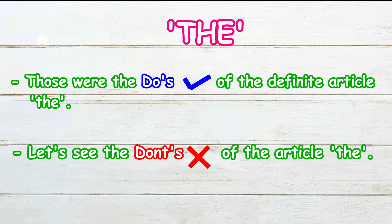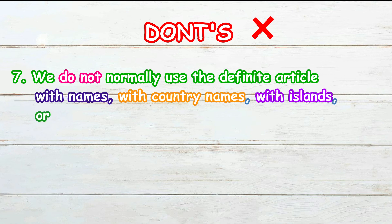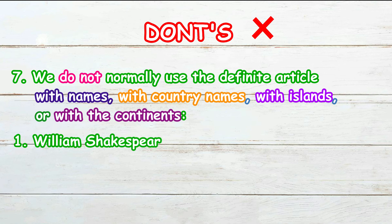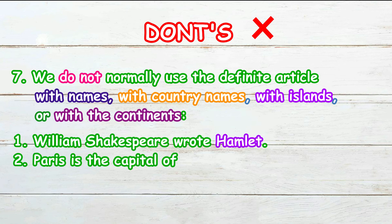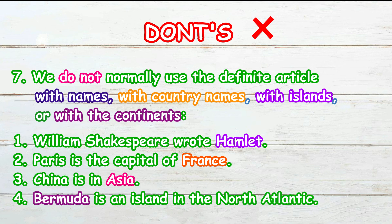Those were the do's of the definite article 'the'. Now let's see the don'ts. We do not normally use the definite article with names, with country names, with islands, or with the continents. For example: 'William Shakespeare wrote Hamlet,' or 'Paris is the capital of France,' or 'China is in Asia,' or 'Bermuda is an island in the North Atlantic.'